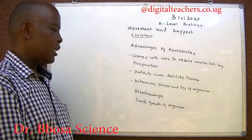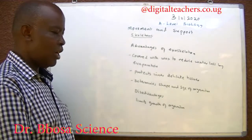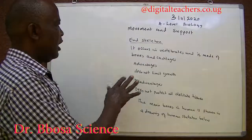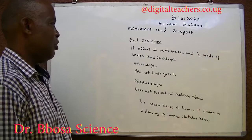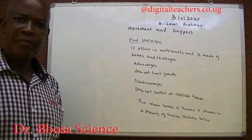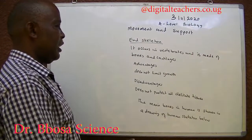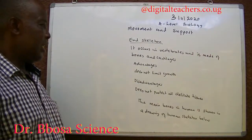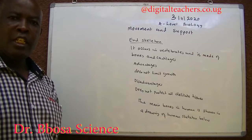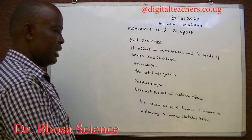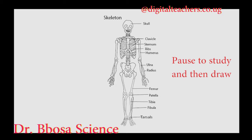Disadvantages: it limits the growth of organisms. C: Endoskeleton. It occurs in vertebrates and is made of bones and cartilages. Advantages: it does not limit growth. Disadvantages: it does not protect delicate tissues. The main bones in humans are shown in the drawing of the human skeleton. You can pause to study and then draw.